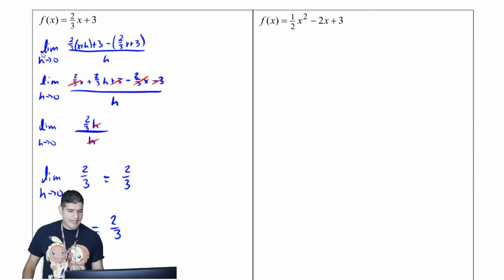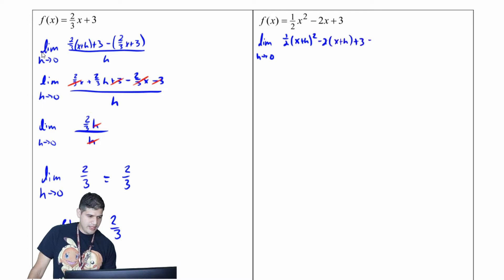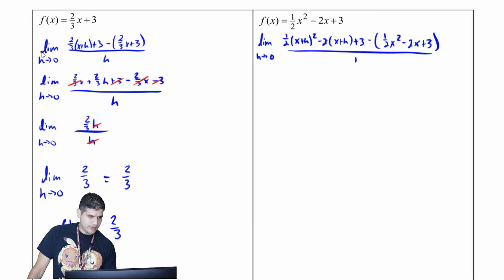Let's start our second problem — this one looks a little meatier. I have the limit as h approaches zero of one-half times x plus h squared minus two times x plus h plus three, minus, in parentheses, one-half x squared minus two x plus three, all over h.